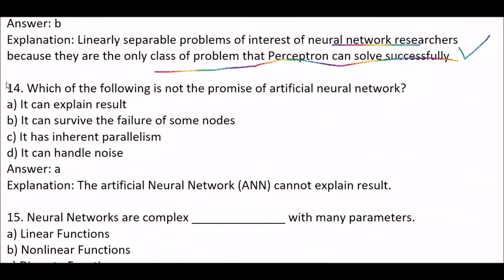Next question: which of the following is NOT a promise of artificial neural networks? Option A: it can explain results. Option B: it can survive the failure of some nodes. Option C: it has inherent parallelism. Option D: it can handle noise. The right answer is option A — artificial neural networks cannot explain results.